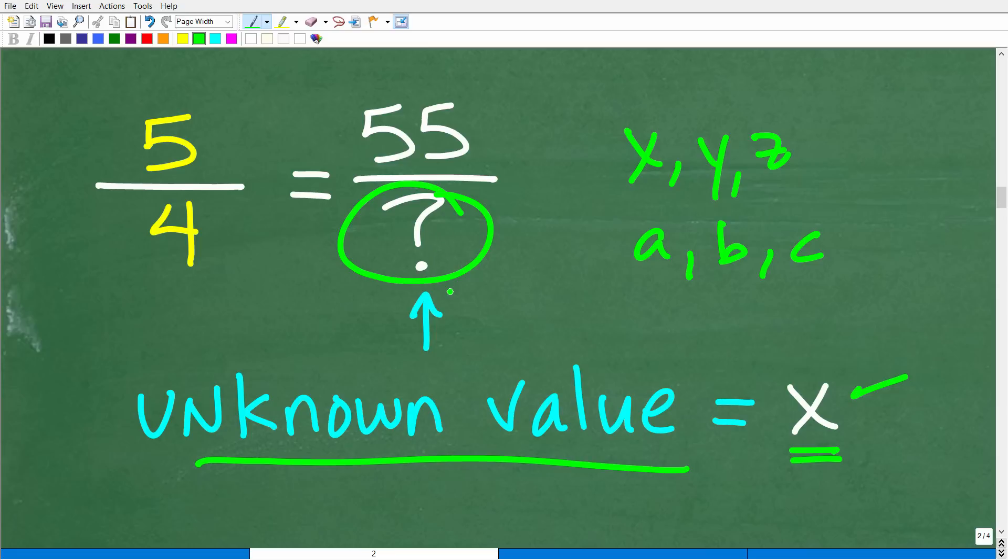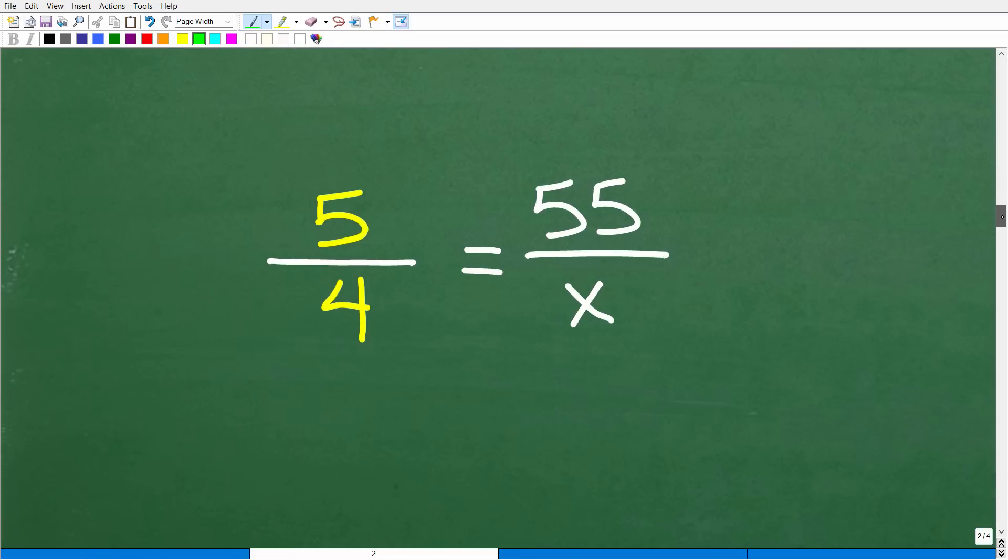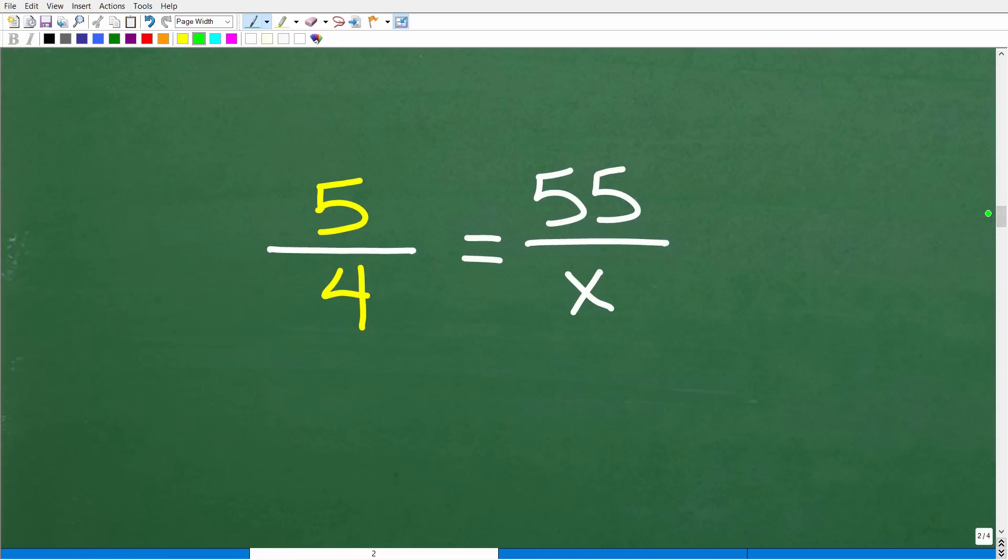So instead of this question mark, I'm going to use the variable X. Now, could I use the symbol, this question mark here? Yes, I could. But, you know, that's going to be kind of confusing because we typically don't use question marks as part of solving equations. Otherwise, we don't have five question mark plus two is equal to three, right? So, anyways, so I'm going to replace this question mark with X because it represents, again, an unknown value. So this is a great opportunity to use a variable. And when we use a variable like X, we have now turned this into an algebra problem, okay?